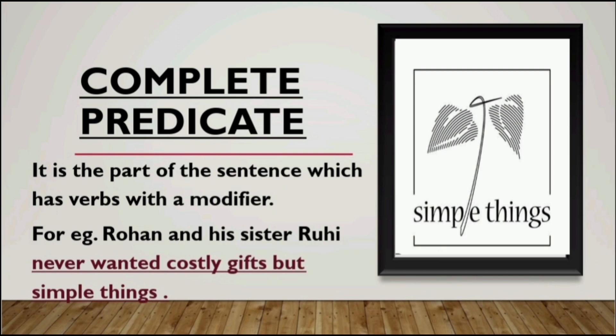Next is complete predicate — it is the part of a sentence which has a verb with modifiers. A complete predicate consists of the verb and all the words attached to it, which could be objects, adverbs, or prepositional phrases. Have a look at this example: 'Rohan and his sister Rohi never wanted costly gifts but simple things.' Here, 'never' is an adverb of negation — in complete predicates, there will be modifiers attached to the verb.